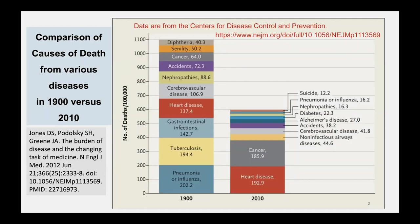This first slide shows a comparison of causes of death from various diseases in 1900 versus 2010. As you can see, way back in 1900, most causes of disease in humans showed up as infectious diseases, whereas in 2010, most causes of death were either cancer or heart disease.